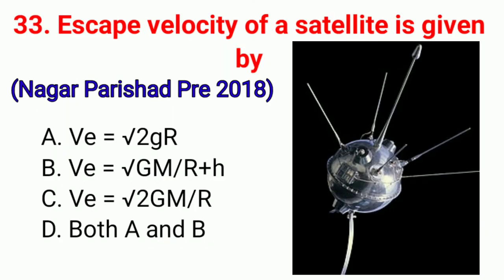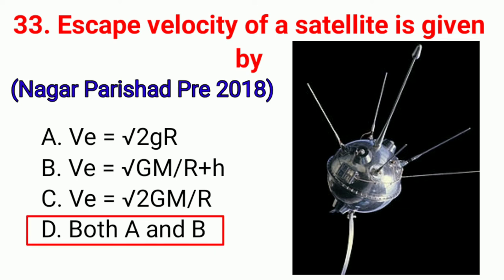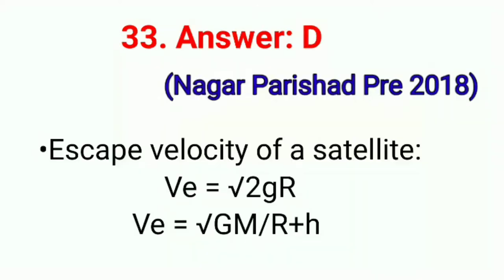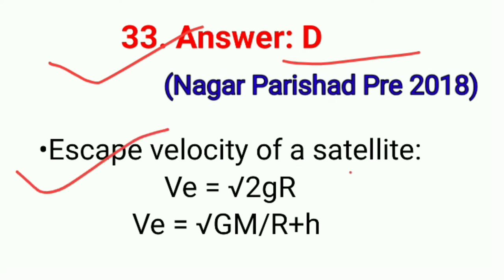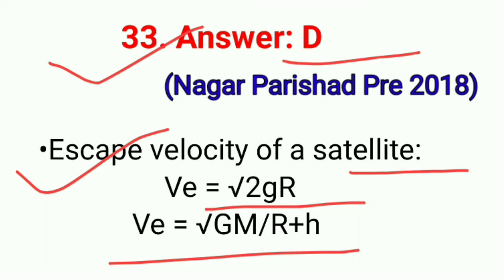Question No. 33. Escape velocity of satellite is given by. This question is also asked in exam Nagar Parichar 2018. Correct option D: Both A and B. Escape velocity: V = √(2gR) and V = √(GM/(R+h)). Correct option D.